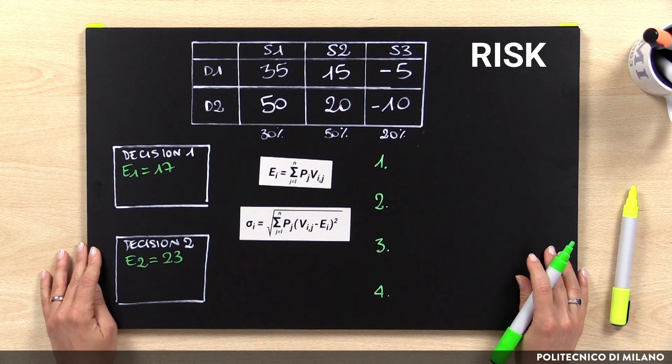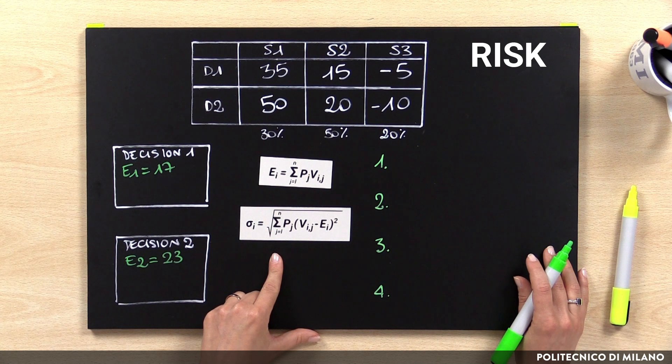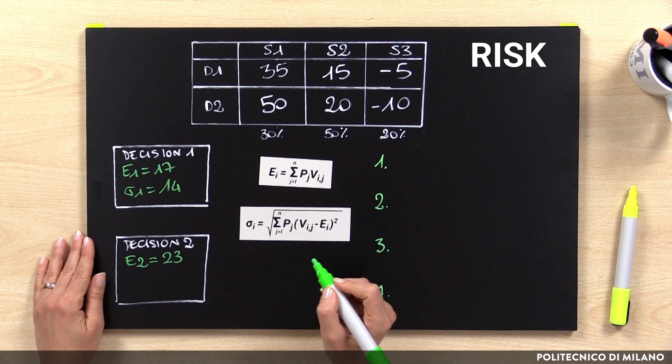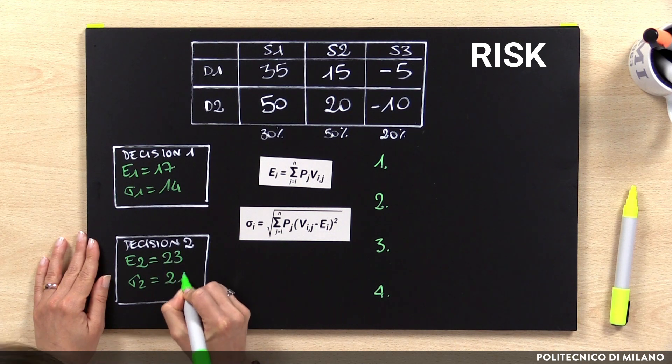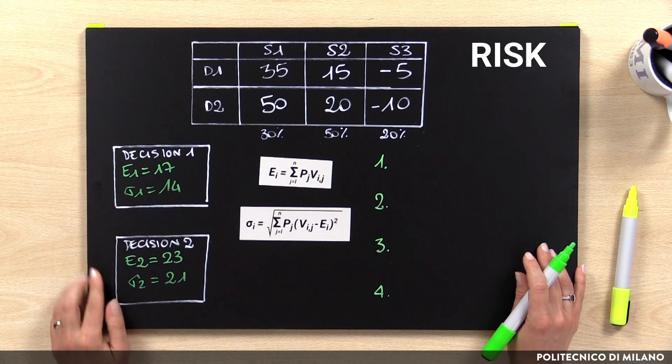Considering just the expected value, the best alternative is rationally D2. However, this value is not deterministic but expected, so it is also important to measure the risk of each decision. There are several methods to quantify the risk of a solution, such as the standard deviation, the variance, or the mean absolute percentage error. The standard deviation for D1 is 14, whereas for D2 it is 21. This means that D1 provides a lower expected value but is more certain than D2 — a typical example of a trade-off in the decision-making process.